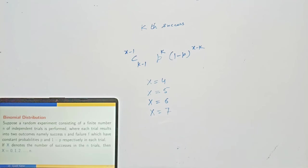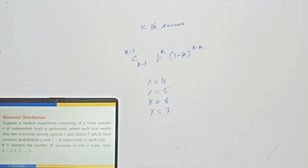In geometric distribution, X was the number of trials to get the first success. Here X is the number of successes in the n trials. Naturally, X can take values 0, 1, 2, and so on up to n. It starts from 0 because it is possible that in n trials there is no success, and it goes up to n when all trials are successes.